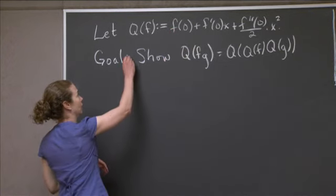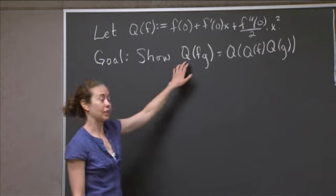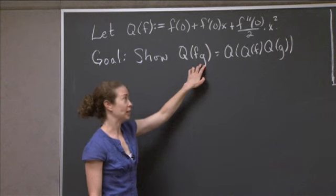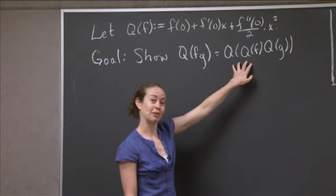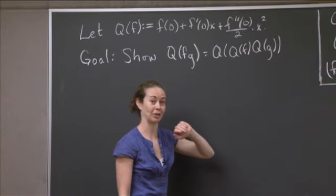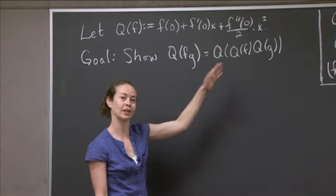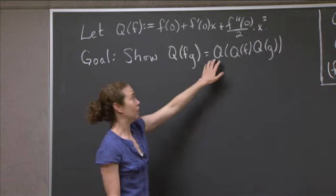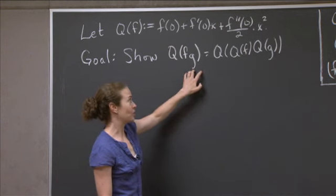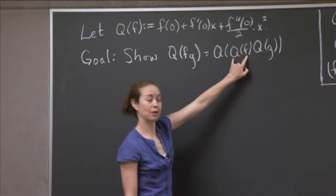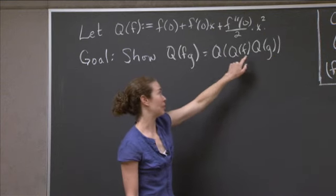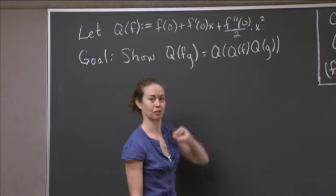Our goal is to show that if I want to take the quadratic approximation of a product of two functions, I can do it in a different way — I can do it in the way written on the right-hand side, which actually looks more complicated in this notation but is in fact easier in reality. Instead of taking Q(fg) directly, I could take the quadratic approximation of each individual function, multiply those together, and then take the quadratic approximation of what I get as a result.